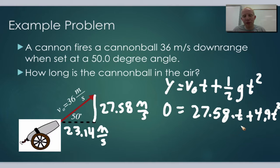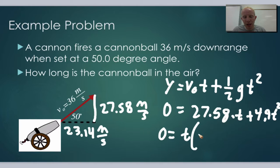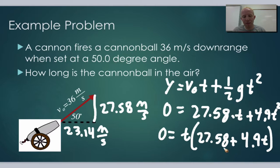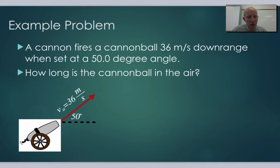Doing a bit of algebra, we can factor out a t: 0 equals t times (27.58 plus 4.9t). Now we have two solutions — one is t equals 0, and the other comes from making the expression inside the parentheses equal to zero.